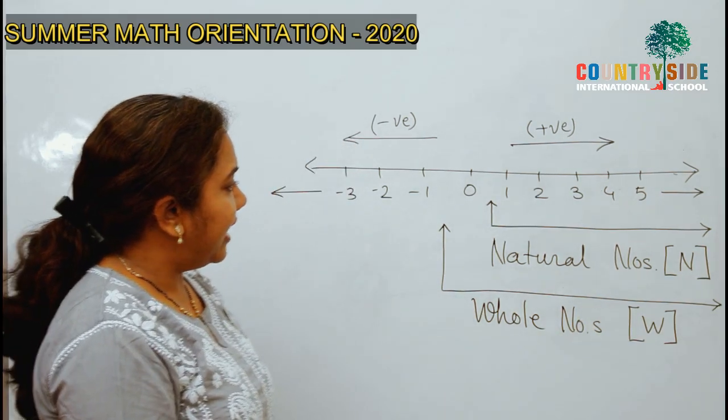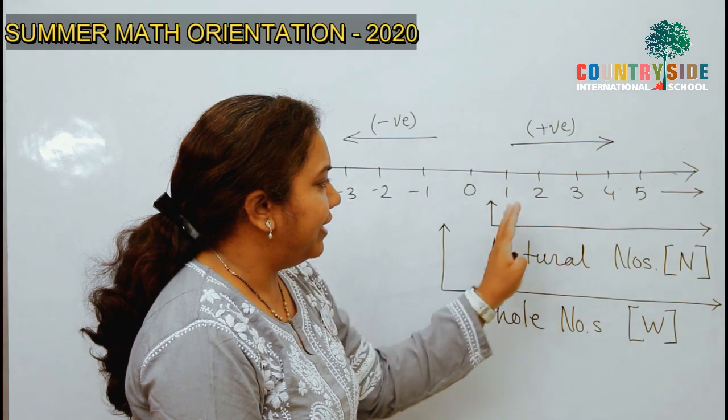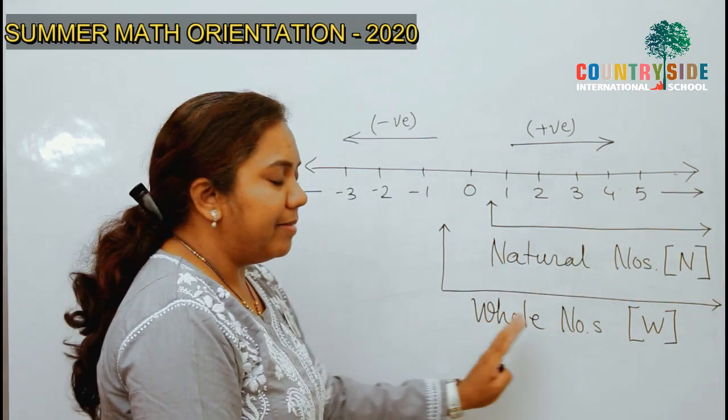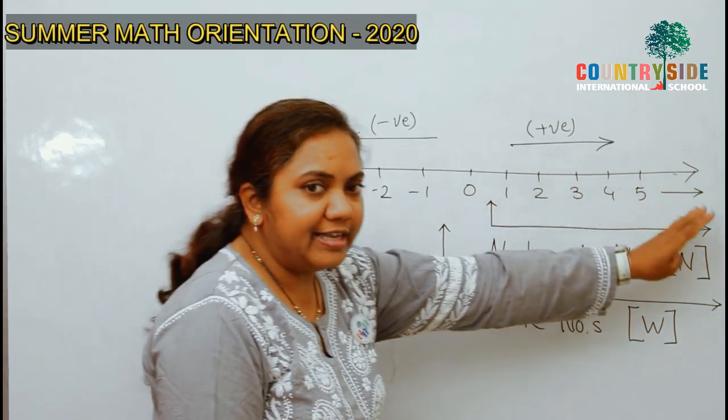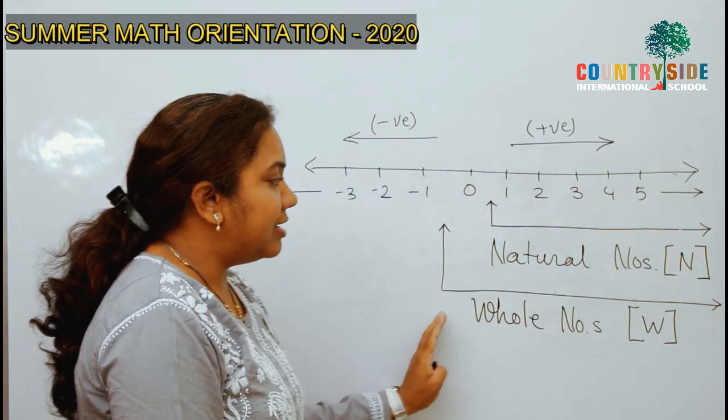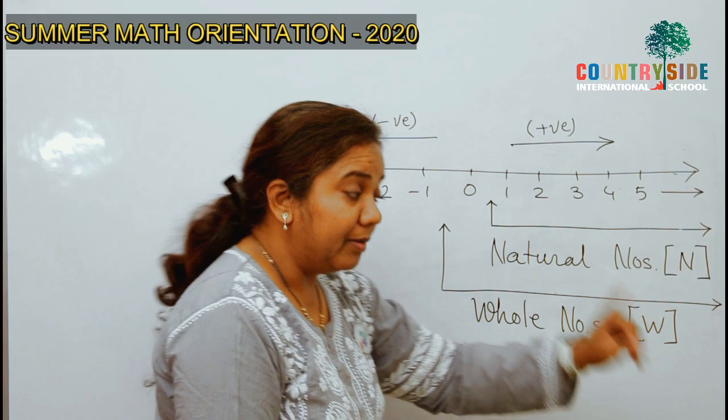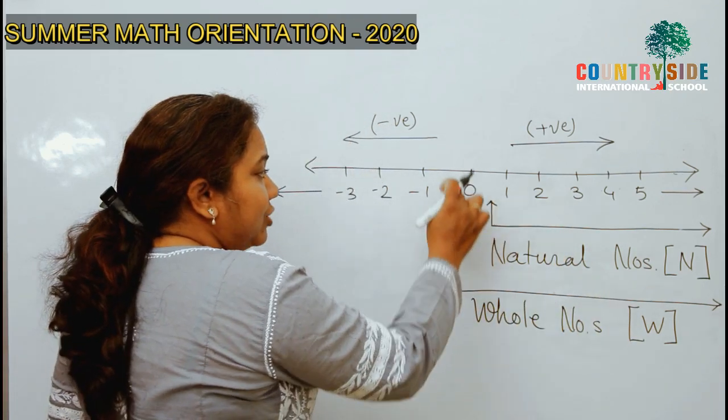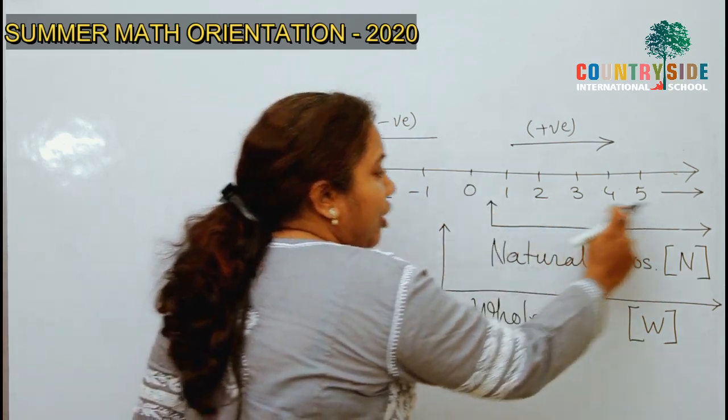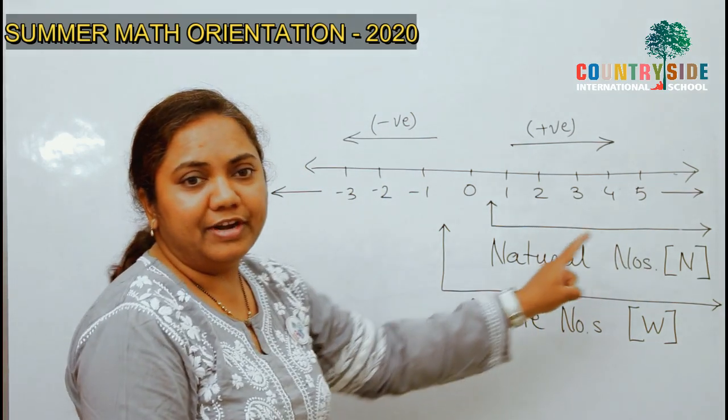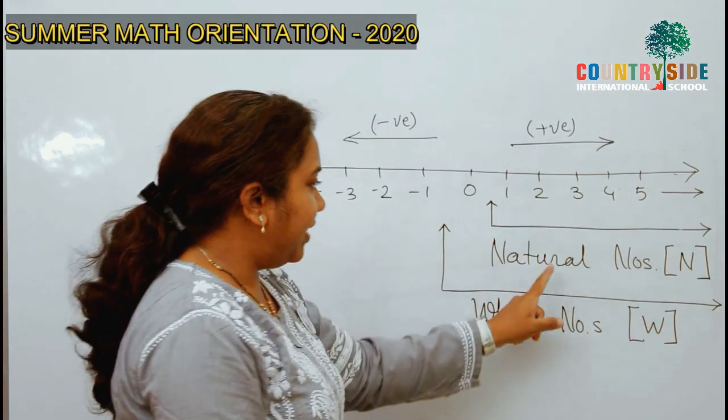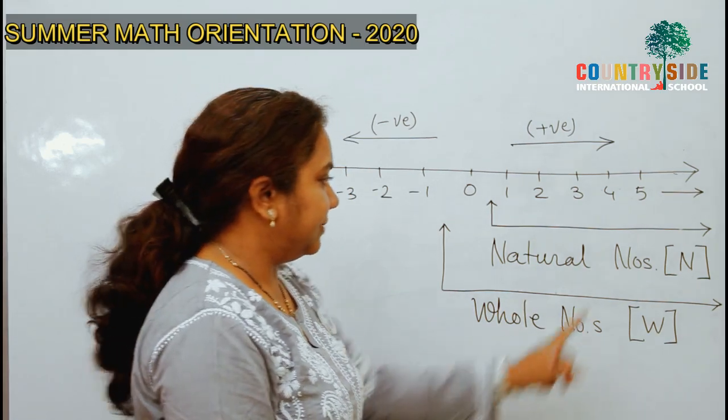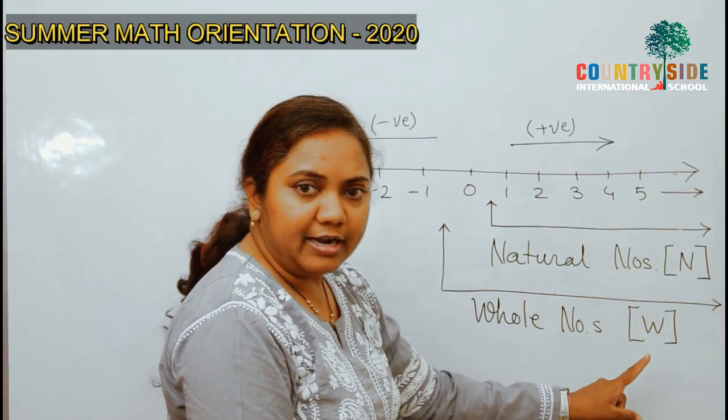Now, you can see that all members of natural numbers are members of whole numbers. Right? But, all members of whole number are not the member of natural numbers. Clear? Good. So, we have discussed two sets N and W.